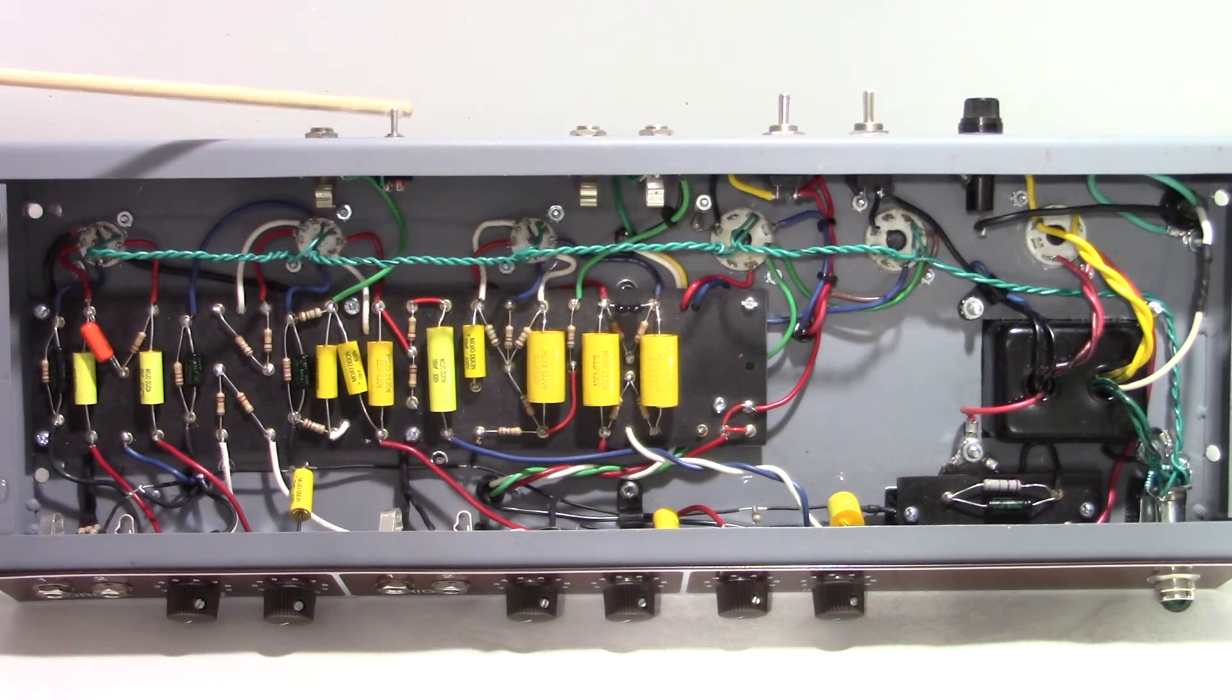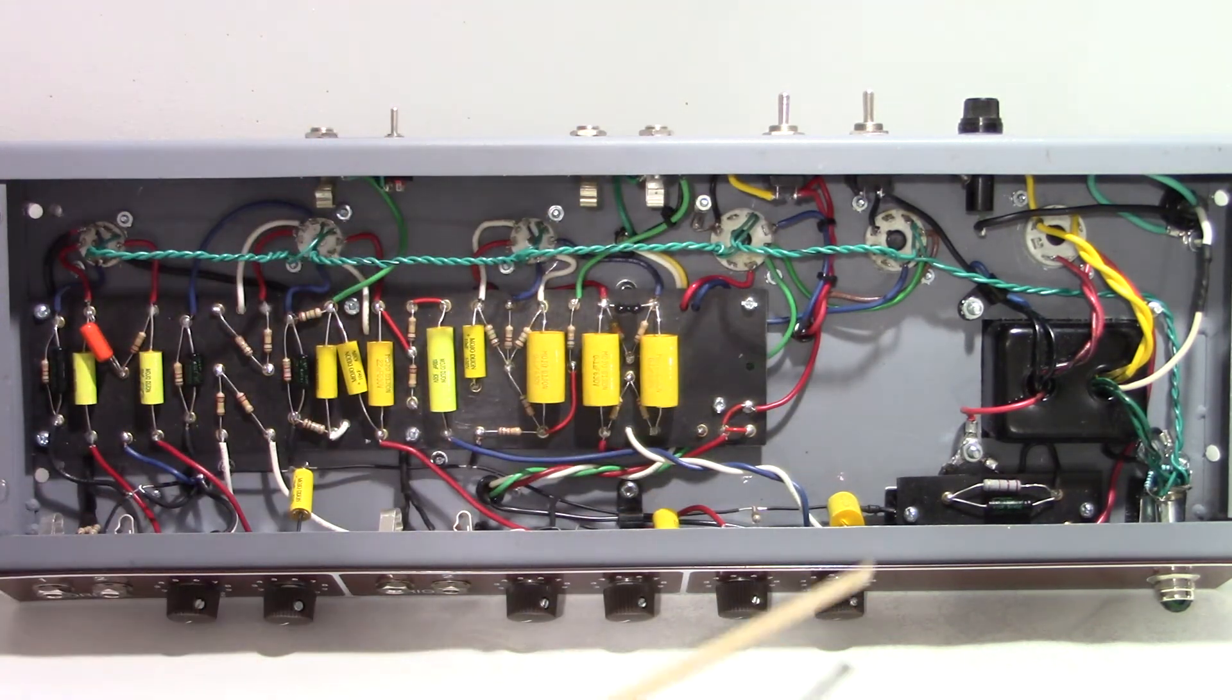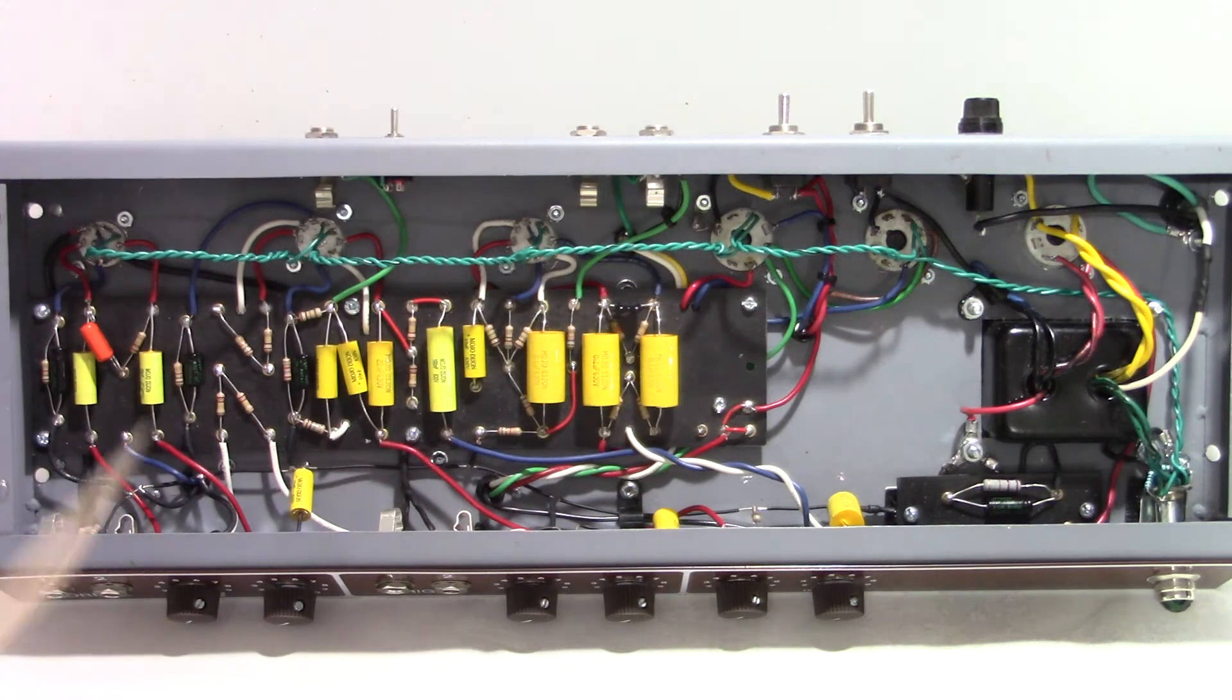One thing I added that the traditional 6G3 did not have is I've added in a simple on-off switch for the tremolo. Just knowing that tremolo, especially this bias-based tremolo, they have a tendency to tick and cause noise and little things like that, especially as they start to age and capacitors start to wear out and that kind of thing.